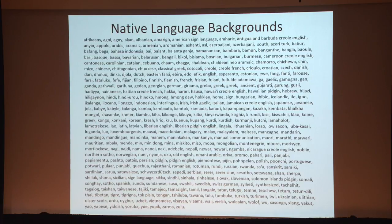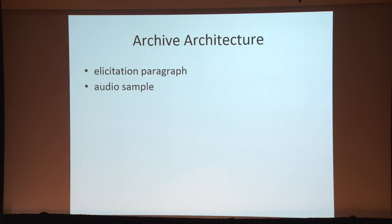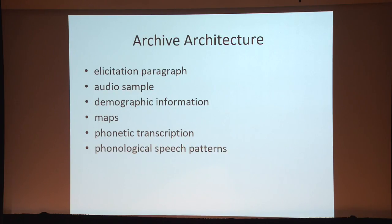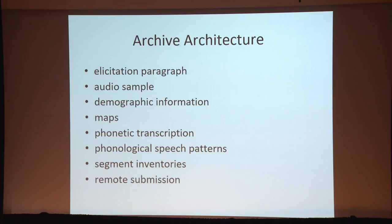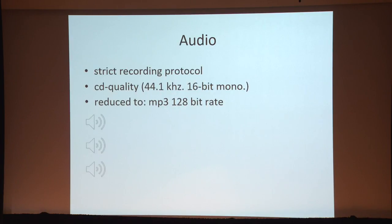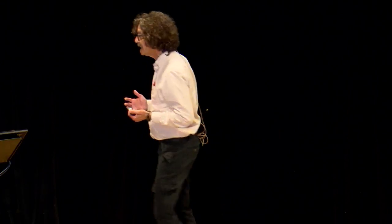These are all the language backgrounds represented. Everyone is reading the same English paragraph — that's what makes the archive a bit unique. The architecture includes an elicitation paragraph, an audio sample, some demographic information about each speaker, maps of the locations, phonetic transcriptions, phonological speech patterns — like what makes a German speaker different from a Zulu speaker of English — and segment inventories of each of the native languages. It also has the opportunity for remote researchers to send in accents from all over the world, and it has a search facility. There are 69 words in the elicitation paragraph — the famous 'Please call Stella' paragraph. We have a strict recording protocol; it's CD quality, reduced to MP3 128 bits.